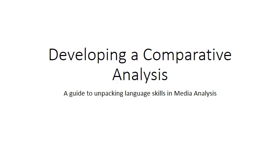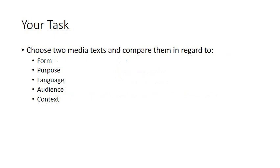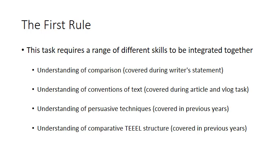This is the first task in Year 12 English where students are required to write formally and with structure, so we really focus on that in this case. To outline the task, you need to choose two media texts and compare them in regards to their form, purpose, language, audience and context. This is the SACE language that we need to address.